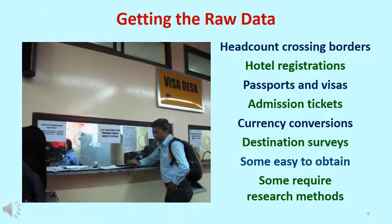Getting the raw data involves taking a headcount as people cross borders by various forms of transportation and when they register at hotels, apply for passports and visas, buy admission tickets, convert money, and respond to research surveys. Some of the data is collected in a straightforward way, such as by immigration officials at borders between two countries, while other data is assimilated from various sources or obtained by using research methods such as sampling.